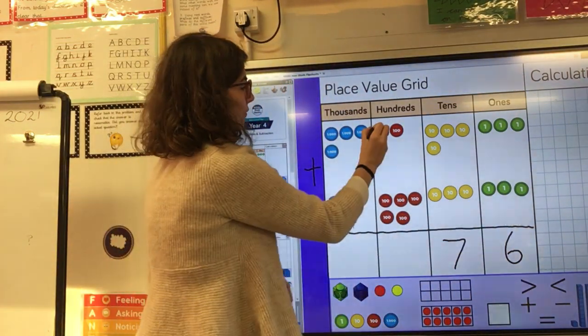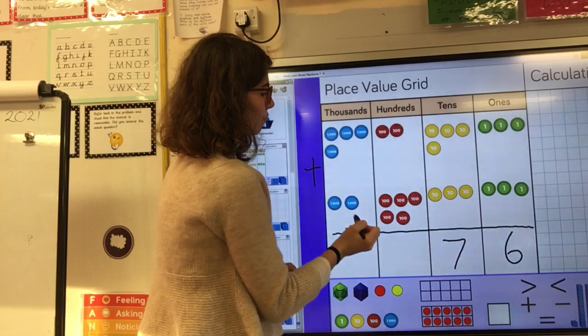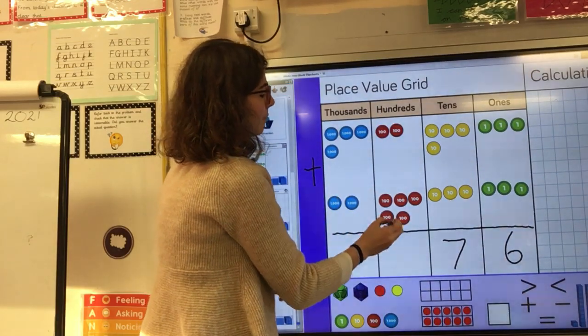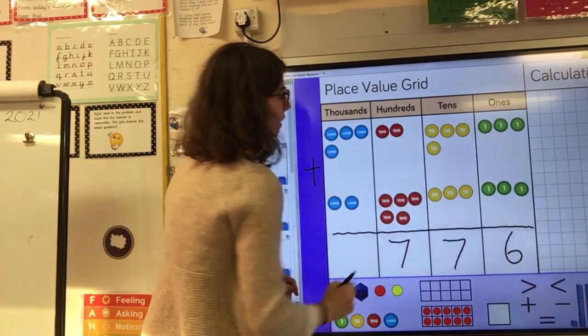Then I move to my hundreds. I've got two hundreds plus five hundreds. All together that will give me seven hundreds.